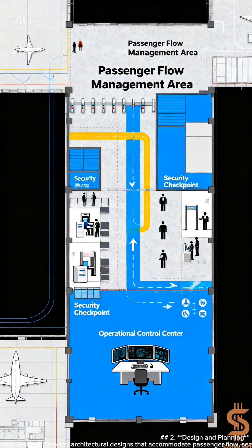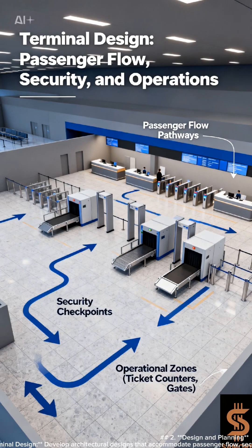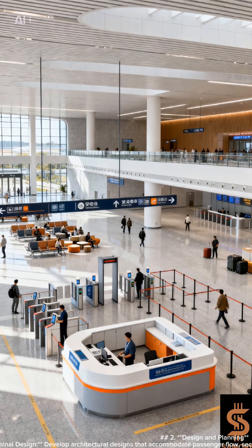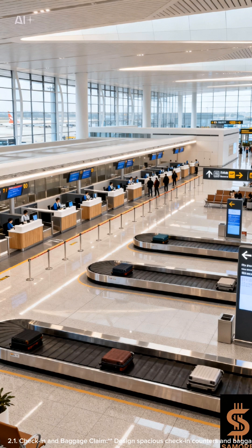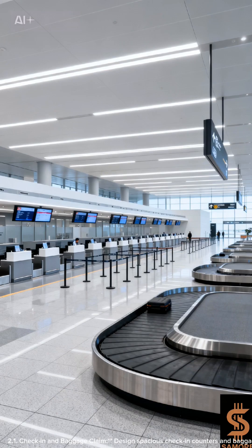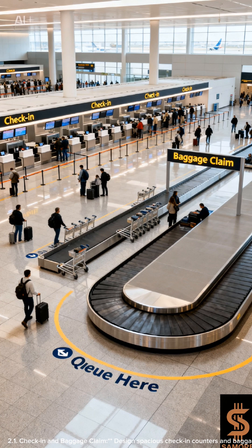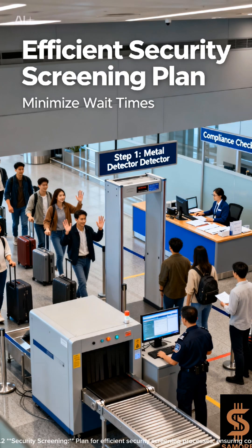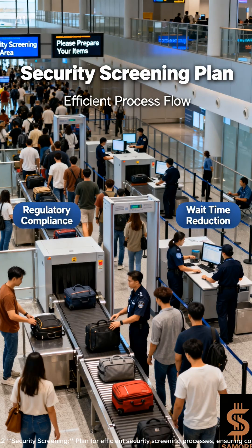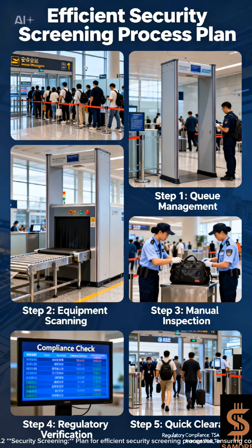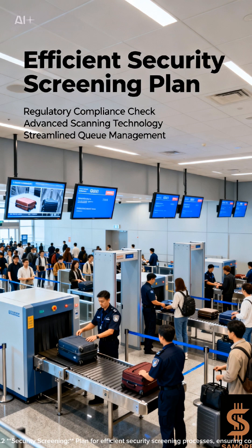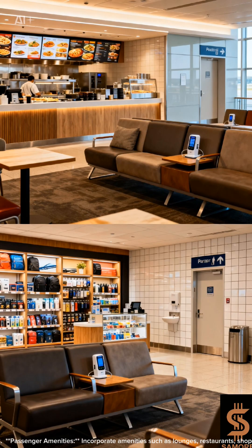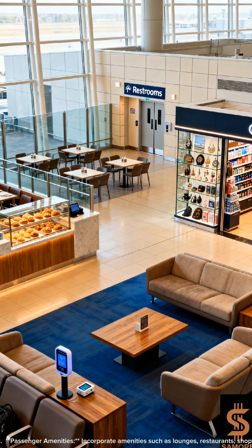2. Design and Planning. Terminal Design: develop architectural designs that accommodate passenger flow, security requirements, and operational needs. Key areas include: 2.1 Check-in and Baggage Claim — design spacious check-in counters and baggage claim areas to handle high passenger volumes. 2.2 Security Screening — plan for efficient security screening processes, ensuring compliance with regulations while minimizing wait times. 2.3 Passenger Amenities — incorporate amenities such as lounges, restaurants, shops, and restrooms to enhance the passenger experience.